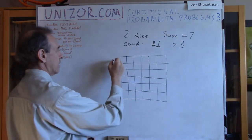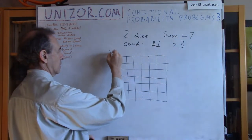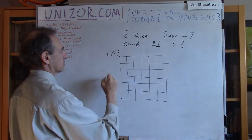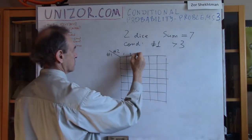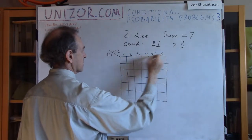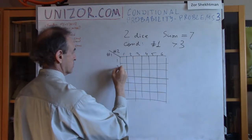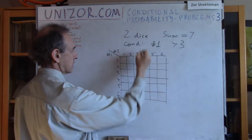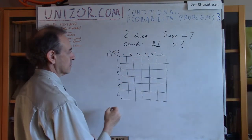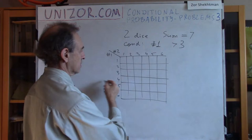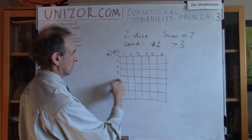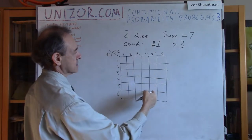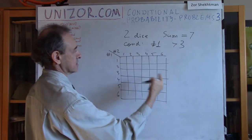The two axes signify die 1 and die 2, numbered one through six each. The intersection of a column and a row represents a pair — for instance, row four and column five means die 1 shows four and die 2 shows five.